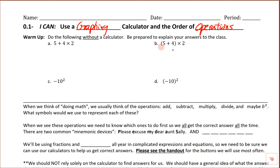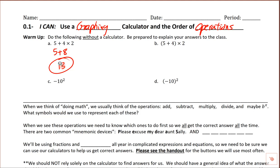We're going to look at the warm-up. There are four parts, and it says to do the following without a calculator. Be prepared to explain your answers and how you got them. We're going to do the multiplication first, so this is going to be 5 plus 8, which gives us 13. Always a good idea to show your work and circle the answer when you're done.